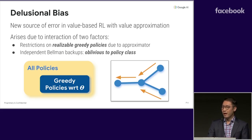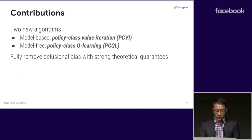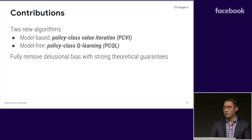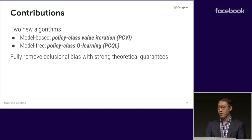The interaction of these two aspects can really cause a lot of headaches. But we do have some good news. We developed two new algorithms which completely resolve delusional bias with general optimality guarantees. The first is in the model-based setting, which we call policy class value iteration. The second is in the model-free setting, which we call policy class Q-Learning.